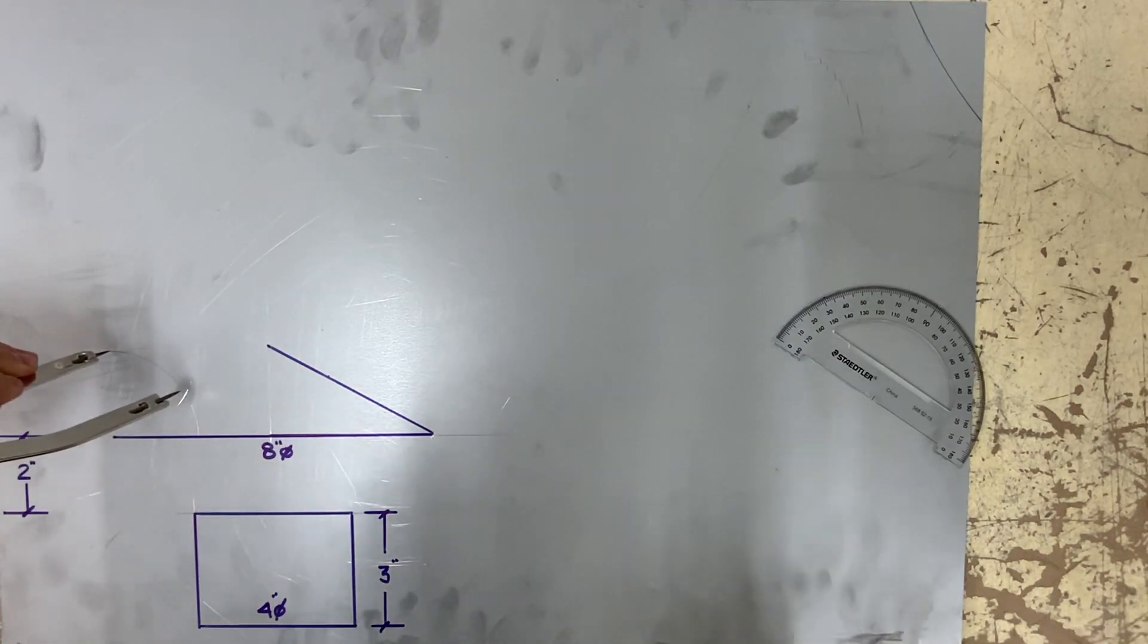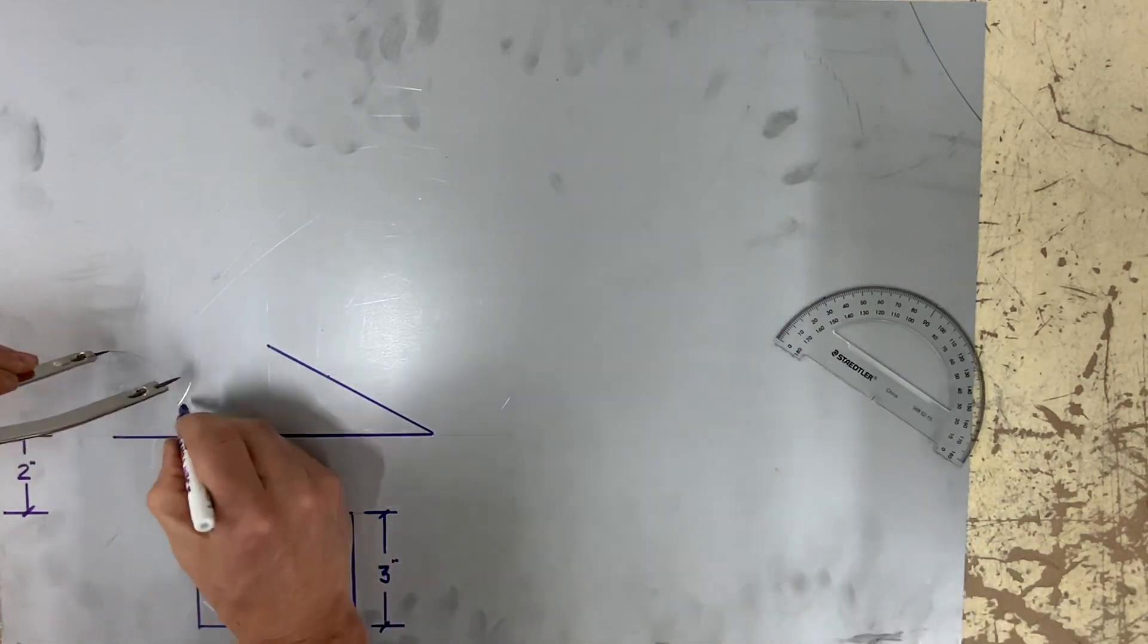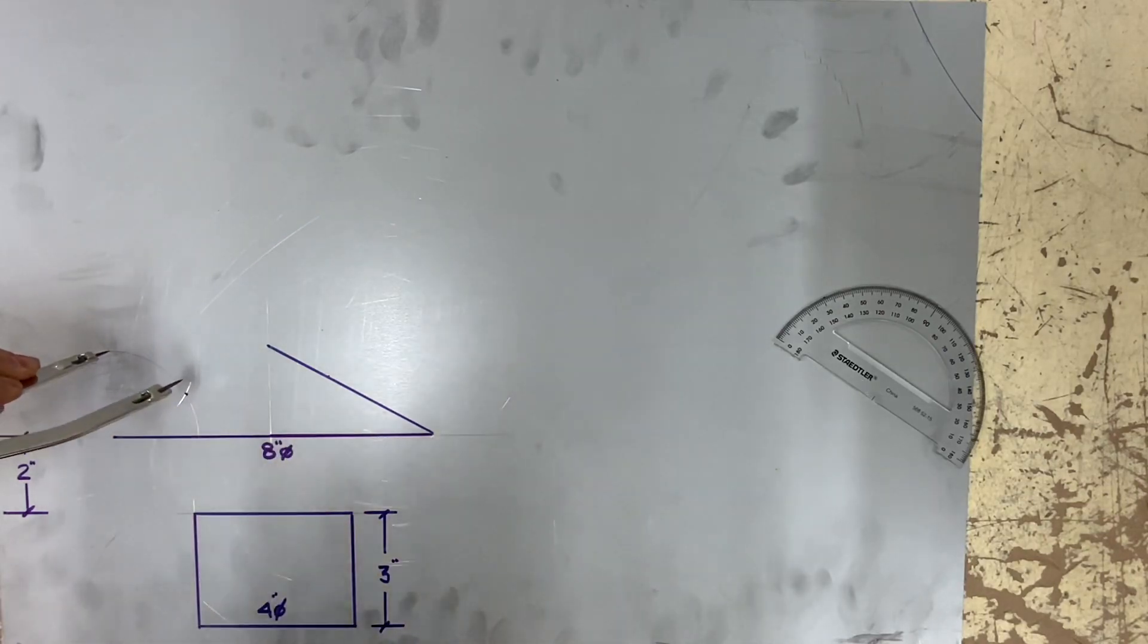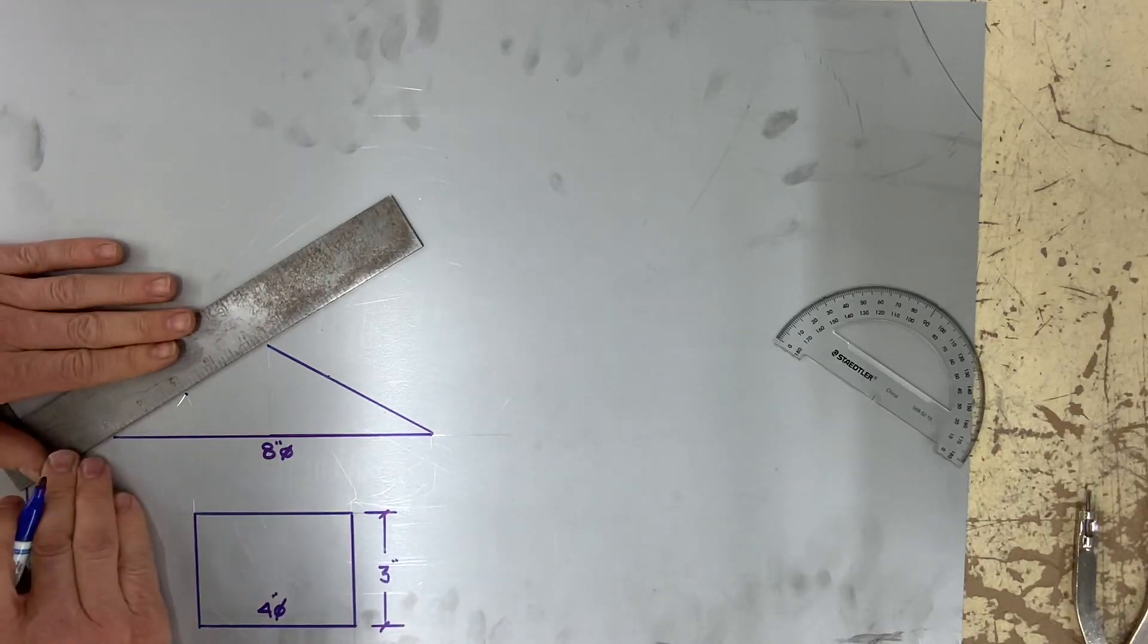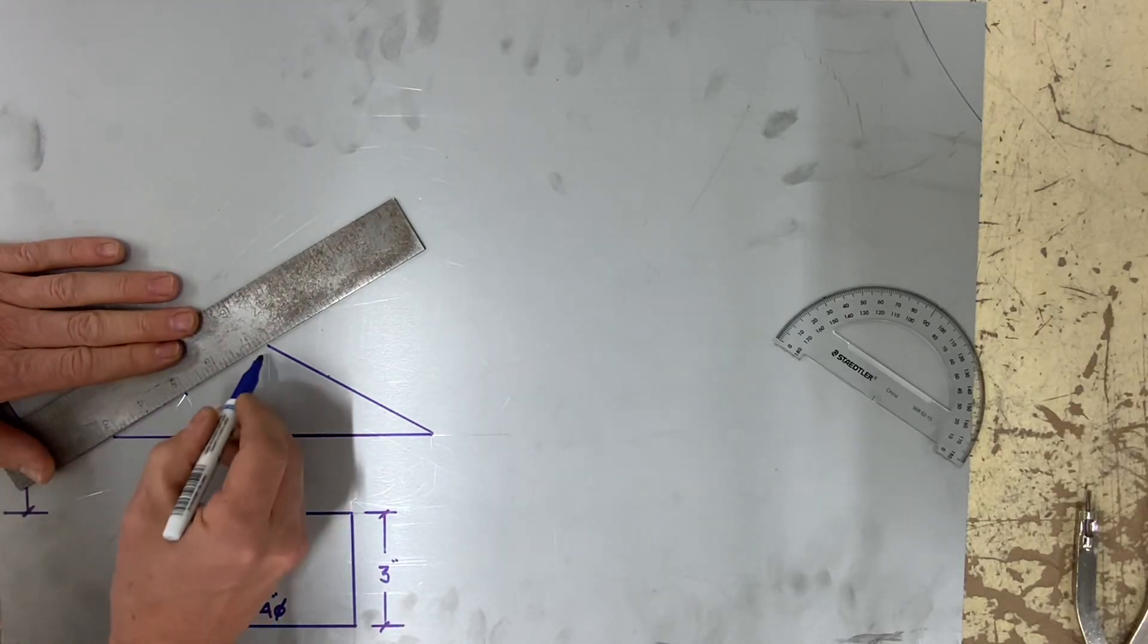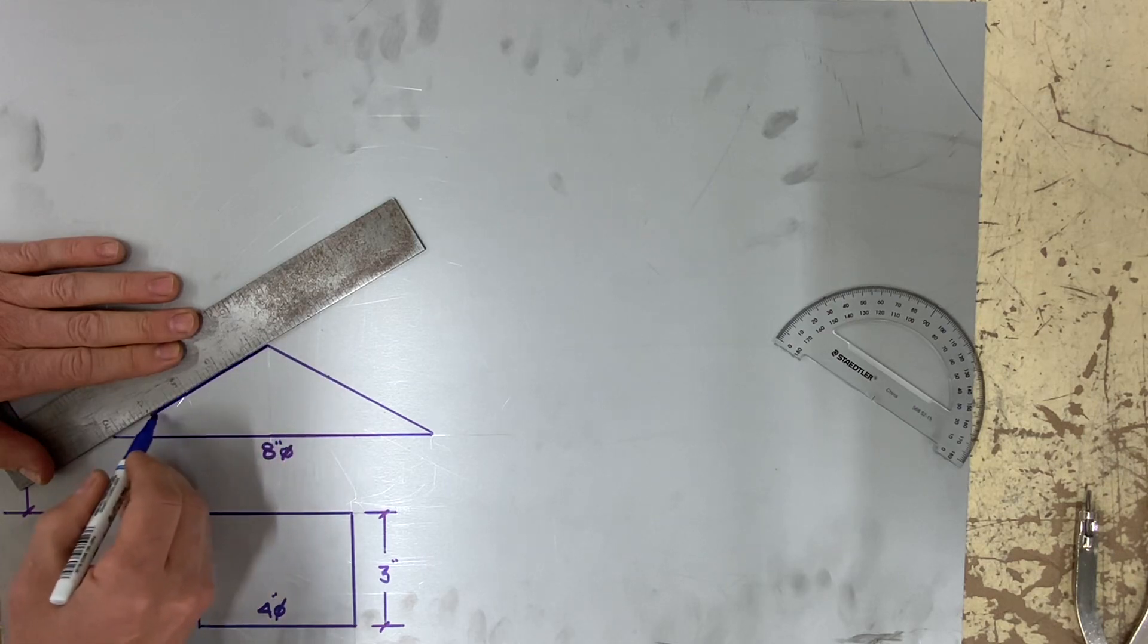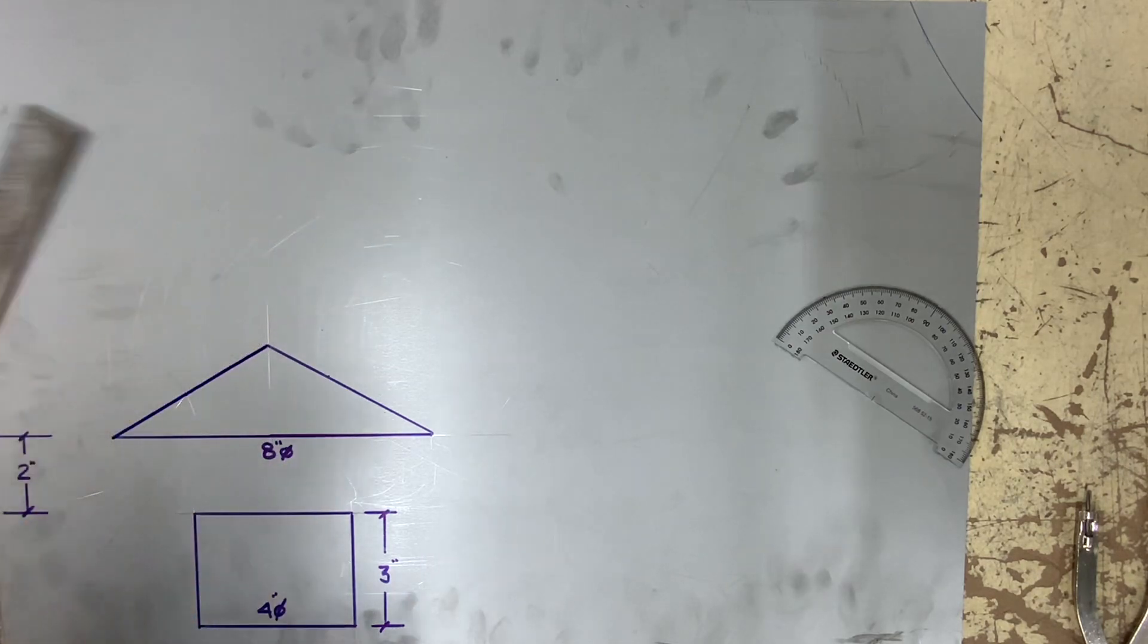And strike this arc to find 30 degrees. Remember your dividers, draw a quarter circle. So you can see here, same thing. We've achieved a 30 degree.